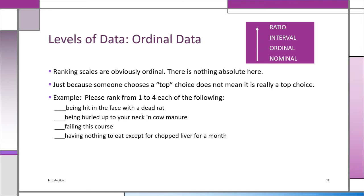Ranking scales are obviously ordinal — like 'strongly agree, agree, neither agree nor disagree, disagree, strongly disagree.' You know the intervals are not equal, but you know that 'strongly agree' is more than 'agree.' Another problem with ordinal scales: if we ask you to rank four scenarios — being hit in the face with a dead rat, being buried up to your neck in cow manure, failing the course, and having nothing to eat except chopped liver for a month — you can rank them one through four, but it doesn't mean you like any of those choices. Ranking doesn't tell you that just because you ranked something first, it's something you want.